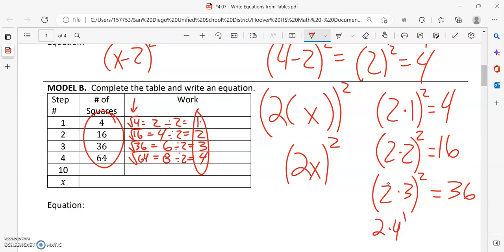And finally, two times four squared, two times four is eight, eight squared is 64. So there we go. We got our pattern. So it is, in fact, this guy. It's two x, all that squared.